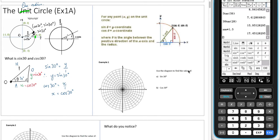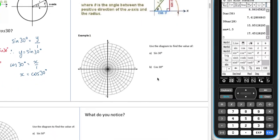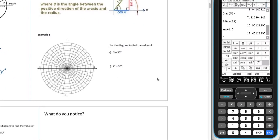So example 1, use the diagram to find the value of sine 30. So each one of these little chunks here equals a 10-degree sweep. So sine 30 will be, and let's zoom in a bit on that so we can see that a bit better. So sine 30 will be 1, 2, 3 sweeps.